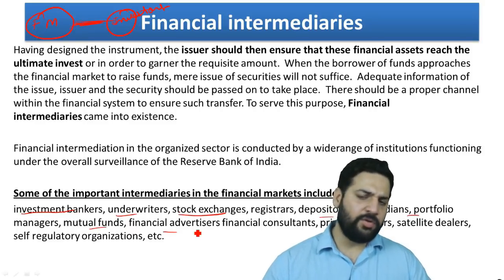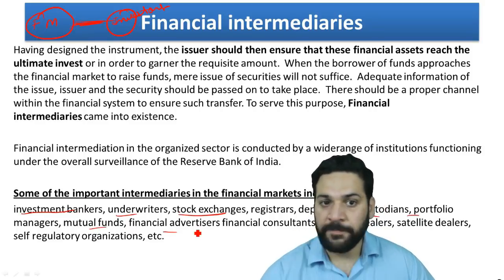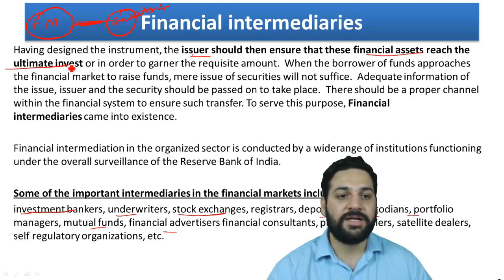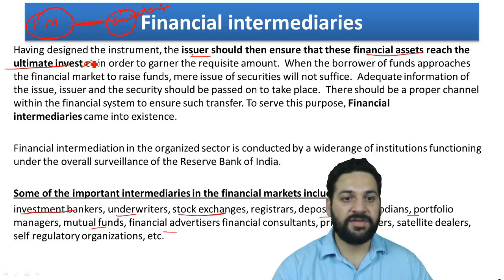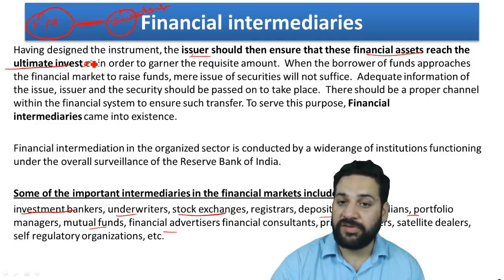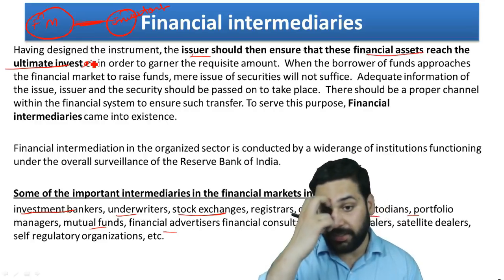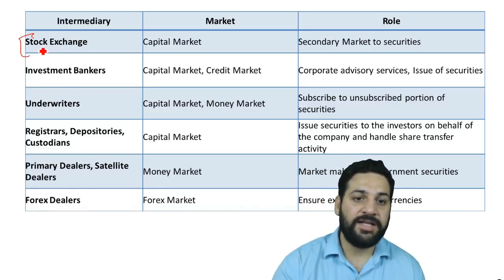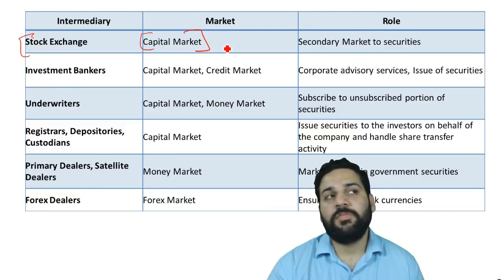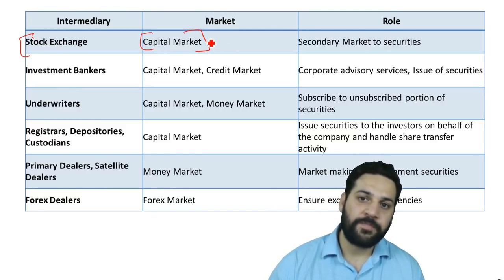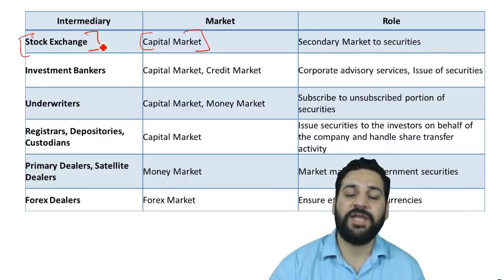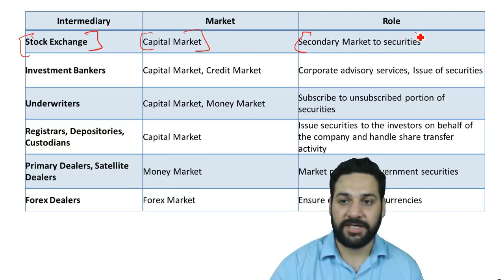The purpose of financial intermediaries is to ensure that financial assets reach the ultimate investors and help them garner the requisite amount. Stock exchanges deal with the capital market — they are where you can buy and sell shares, acting as a secondary market.